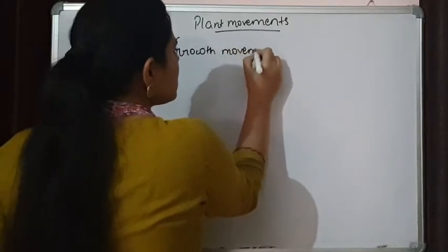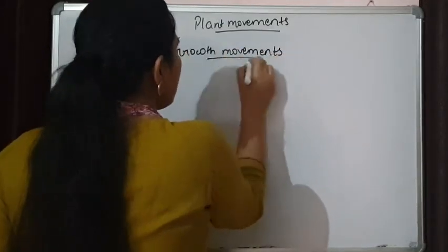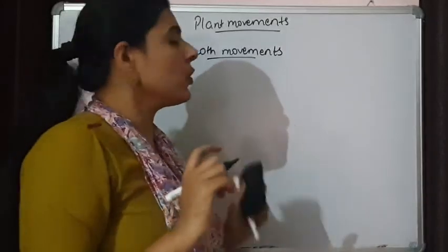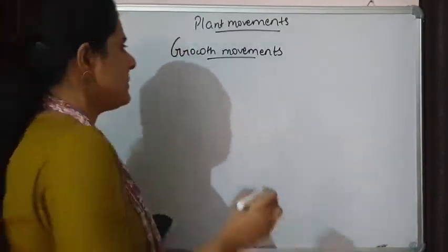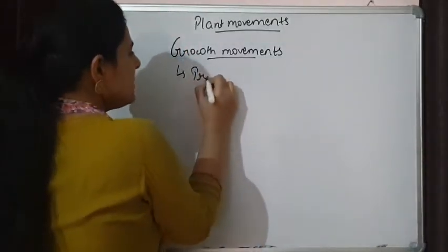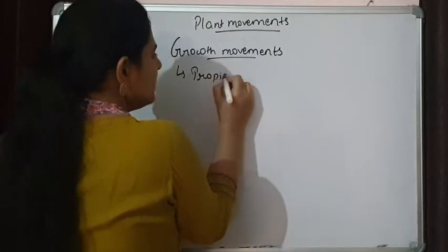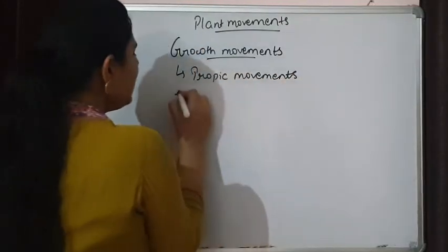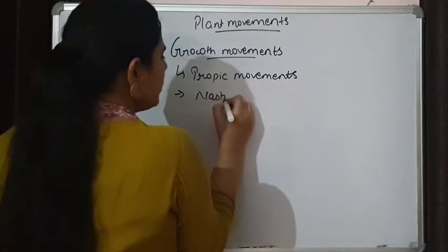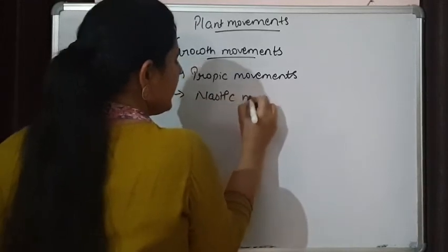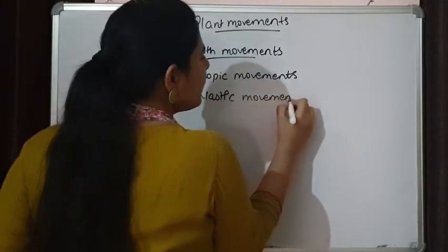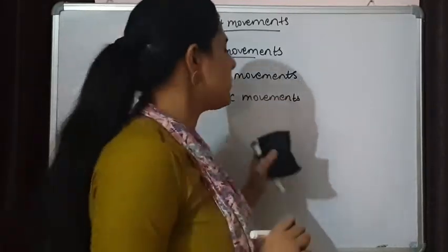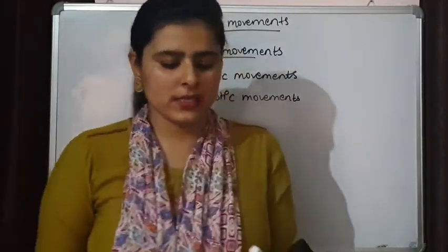Growth movements are of two types: tropic movements and nastic movements. They are different from each other. What is the difference between tropic and nastic movements?